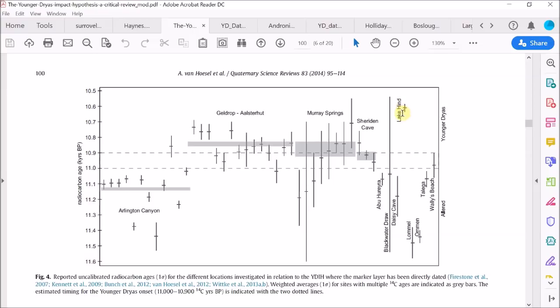We saw from the paper by Van Hoesel that there is a single radiocarbon measurement from the black mat at Lake Hind that appears to be too young by several hundred years with quite a small range or uncertainty range. So it looks to be inconsistent with the Younger Dryas impact hypothesis.